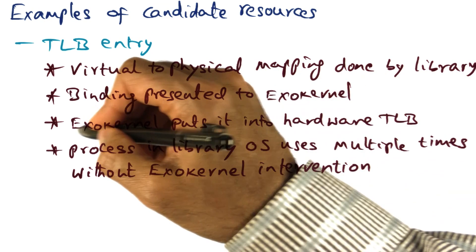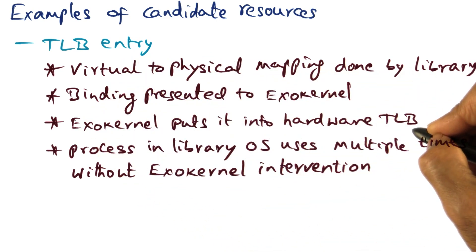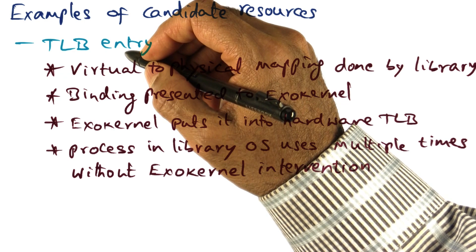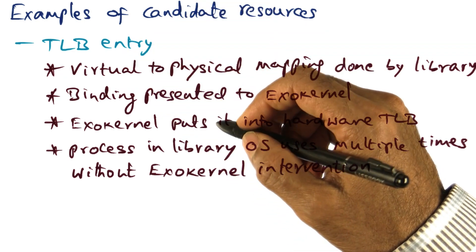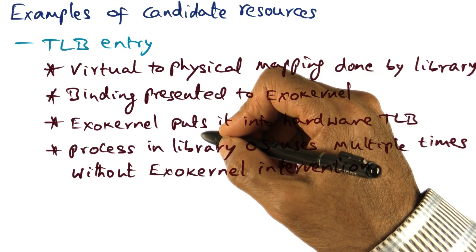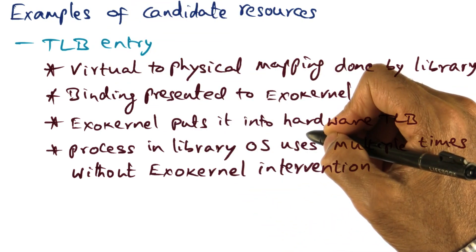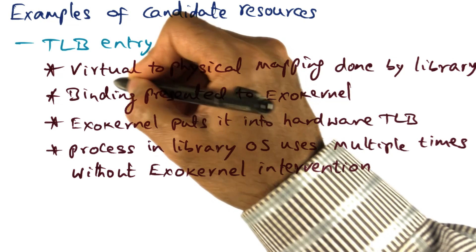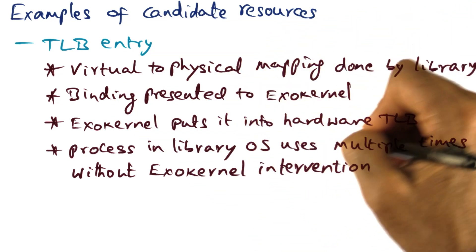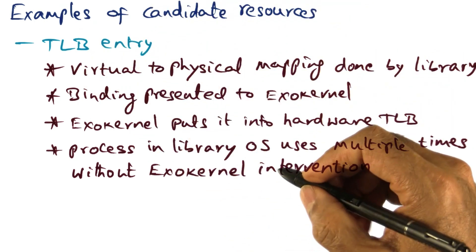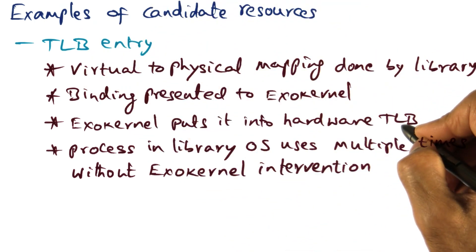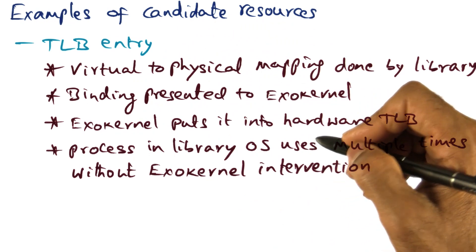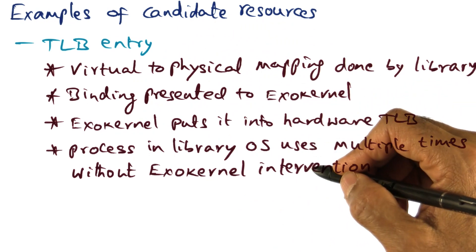Now this is a privileged operation. Putting an entry into the hardware TLB is a privileged operation — the library operating system cannot do it by itself, because it doesn't have the same privilege as exo-kernel. And therefore, once that capability in the form of the encrypted key for this TLB entry is presented to exo-kernel, exo-kernel on behalf of that operating system puts that mapping into the specific TLB entry of the hardware TLB. Once this entry has been put into the TLB, the process that is going to be using that virtual page, when it is running, can use this multiple times without exo-kernel intervention.